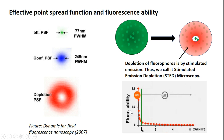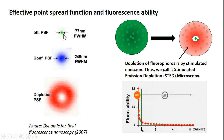STED depletes fluorescence based on a plot of fluorescence ability versus the intensity of the incident beam. Once the intensity of the incident beam is higher than the saturation intensity, the fluorescence ability depletes. The STED beam intensity is always higher than the saturation intensity, which is why it depletes the fluorescence except at the central focal spot, resulting in a very narrow effective point spread function.